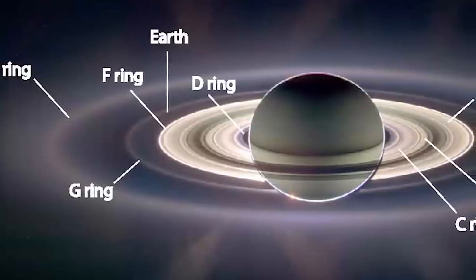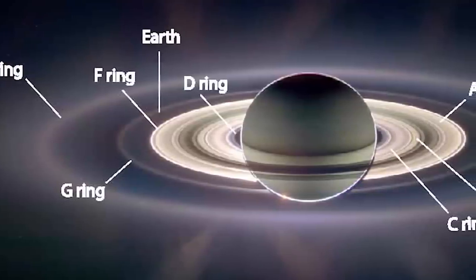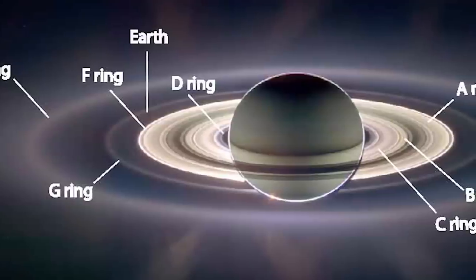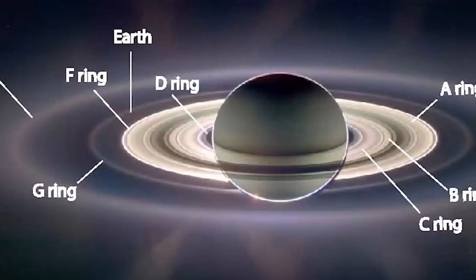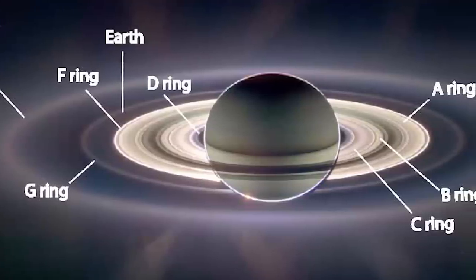However, this classification does not determine their position relative to Saturn. E is the most eccentric ring, followed by G, F, A, B, C, D being the closest ring to Saturn.